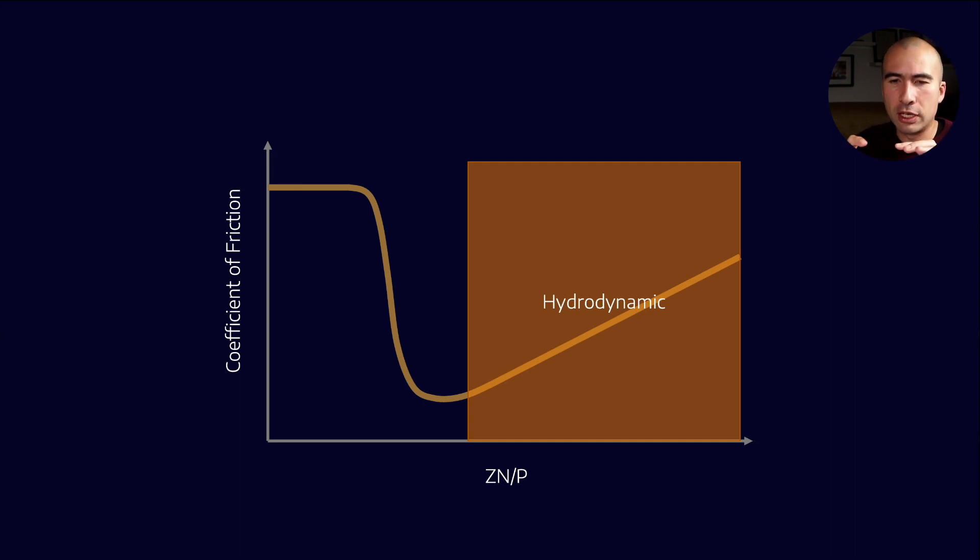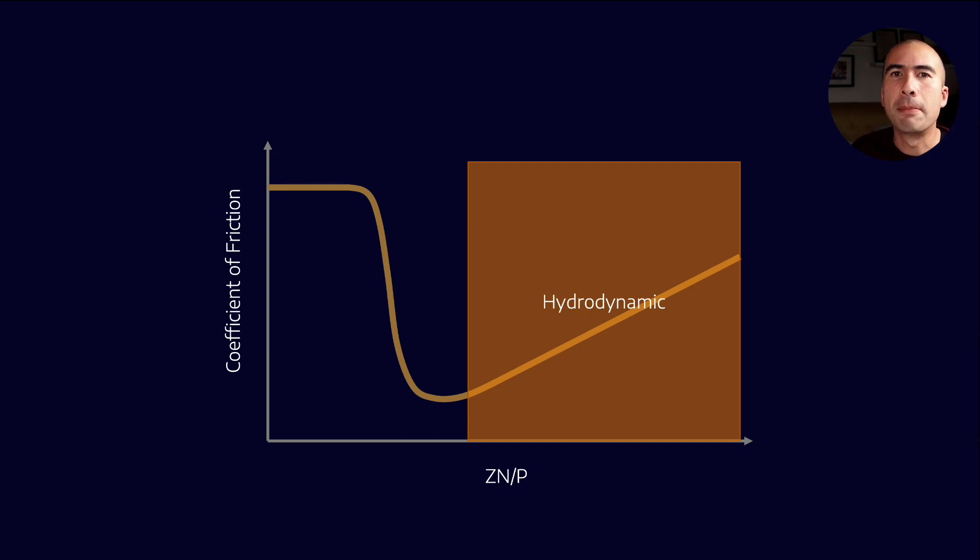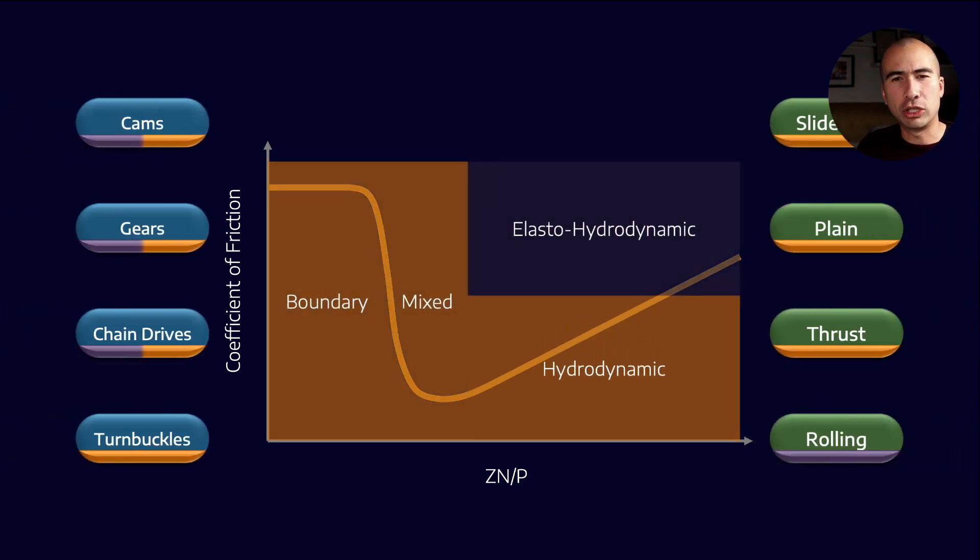Not only do we have specific lubrication regimes, but we only have a select number of different machine types. You've got cams, gears, chain drives, turnbuckles, slideways, plane bearings, thrust bearings, and rolling element bearings. Whenever I encounter a mechanical system, I try and break up the system into these eight different components, because each of them really exists within a couple of these lubrication regimes.